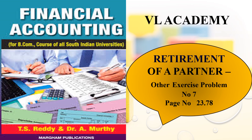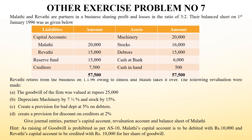Welcome to VL Academy. In this video, we are solving the retirement of a partner - Exercise Problem Number 7, which is on page number 23.78. In the problem, Malathi and Revathi have been two partners sharing profit or loss in a 3 to 2 ratio. But Revathi retires from the business on 1/1/96 due to illness.